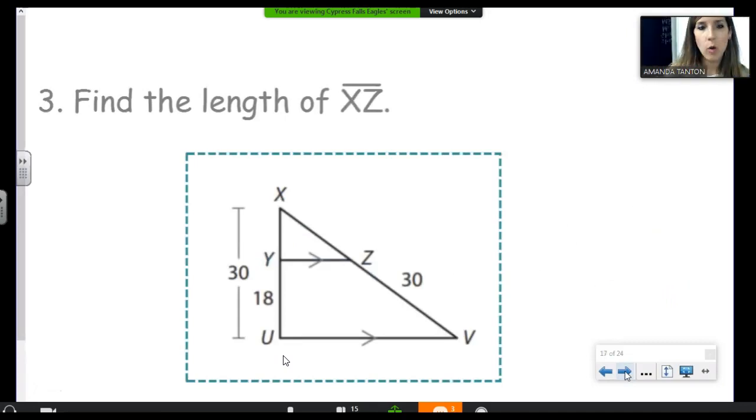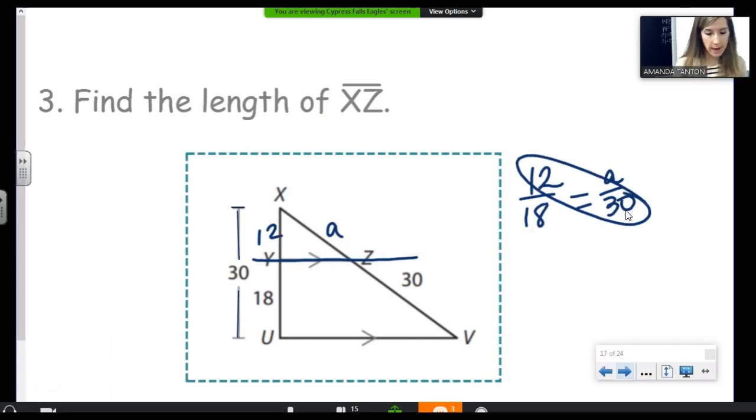All right, this one, there's only one extra step to do. We know that YZ splits the sides proportionally. Okay, so we cannot say 30 is to 18 as X is to 30. You don't just throw the numbers you're given into the proportion all the time. So I'm going to call it A because X is already in the picture. We do need to subtract here. It is important that we're using the pieces created by YZ instead of using whole side of XU. All right, now we can say 12 is to 18 as A is to 30. Cross multiply and divide. I think we get 20. Awesome. So A is 20.